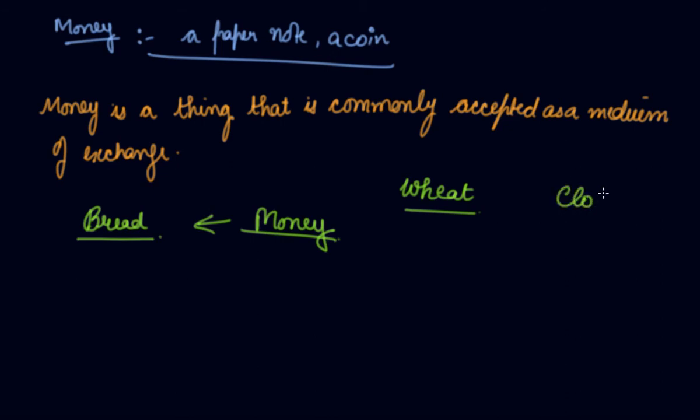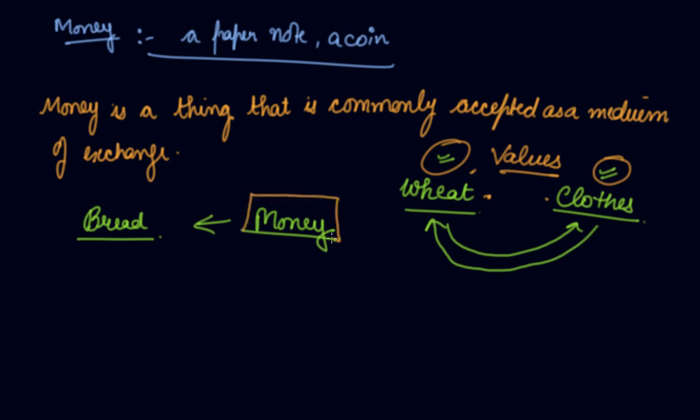And there is a person who manufactured clothes. So there was a trading of goods with goods. There was an exchange of goods with goods. But it suffered from various drawbacks, which became very difficult to evaluate. How much wheat you should give for the amount of cloth? So you cannot compare the value of wheat and cloth. So it becomes very difficult to have exchange.